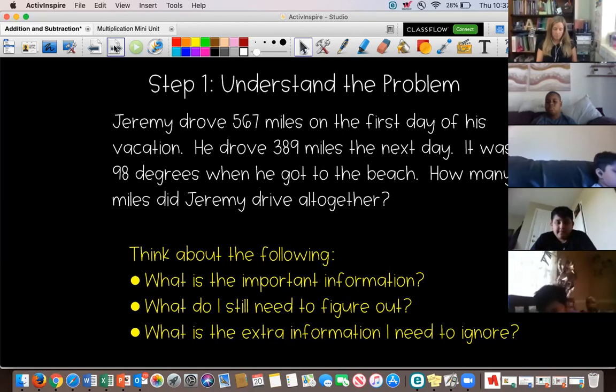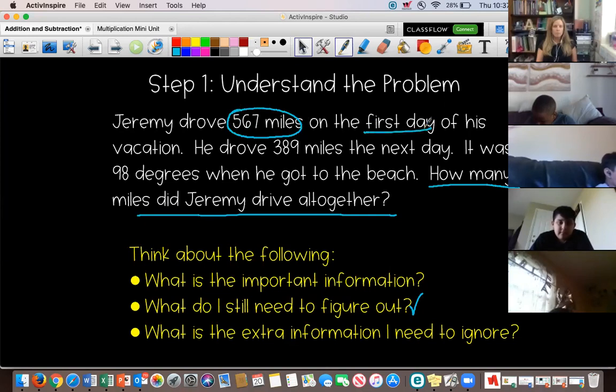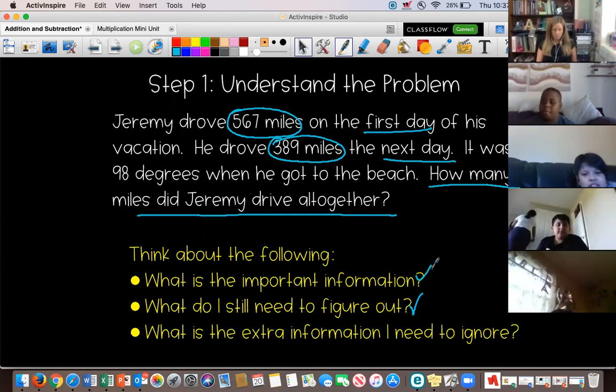So, I'm going to read the problem once through, then go back and find the important information and talk about what I need to keep in mind when I solve it. So, I'm looking at, Jeremy drove 567 miles on the first day of his vacation. He drove 389 miles on the next day. It was 98 degrees when he got to the beach. How many miles did Jeremy drive altogether? So, first, I'm going to think about what do I need to figure out and what's the important part. So, I see, and I'm going to underline, when you do a problem like this, you should highlight and underline things. But I see it's asking me how many miles did Jeremy drive altogether? So, that's what do I need to figure out? I need to figure out how many miles he drove altogether. So, I need to go back and find out what's important about that. What are the numbers in the problem I need to use? He drove 567 on the first day, and he drove 389 miles on the next day. And then there's one other number. It says it was 98 degrees when he got to the beach. This question is asking me about miles. So, I know that that 98 degrees part, that's not important. It doesn't say anything about it. So, I'm going to ignore that number completely.